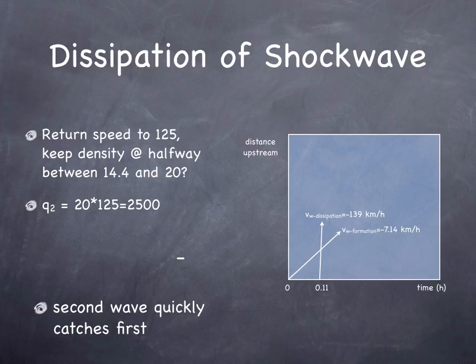What happens in practice is they go faster, but they also spread out some, so it's somewhere in between those two cases. For instance, if we keep the density at halfway between 14.4 vehicles per kilometer and 20 vehicles per kilometer, then we have a dissipation wave of 139 kilometers per hour, which quickly, but not instantaneously, catches the first shock wave formation.